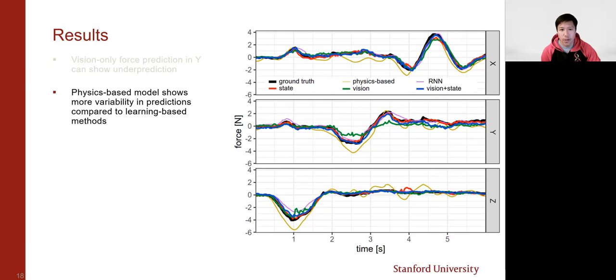Overall, the physics-based model shown in gold displays a lot more variability in measurements, and this is likely due to the inaccuracy stemming from movements in the last few wasted degrees of freedom of the manipulator.